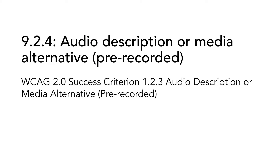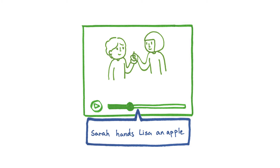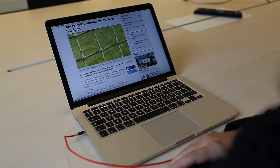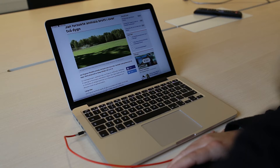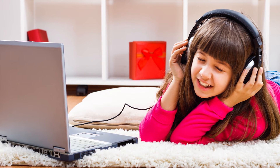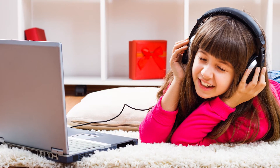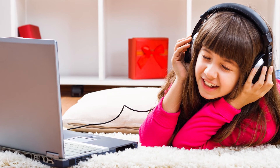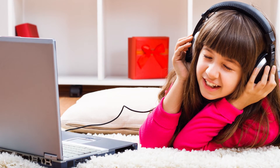9.2.4, audio description or media alternative, pre-recorded, is based on WCAG 2.0 success criterion 1.2.3. Audio description is an audio track where a speaker explains what is happening visually in a video, used to give visually impaired users equivalent information as other users get from seeing the video. This requirement states that if you have synchronized media, there should be an audio description as well. But if you provide a text equivalent to the media that is easy to access from the video page, then you do not need an audio description. In some situations, for example with a good speaker integrated into the media, audio description might not be needed, but in other situations you might need quite extensive audio descriptions. This requirement is only relevant for pre-recorded media.